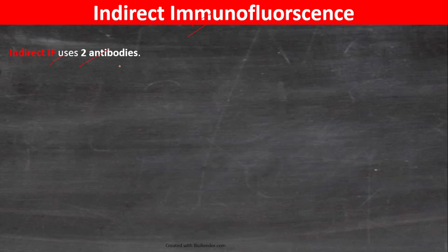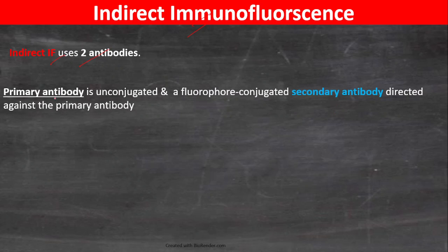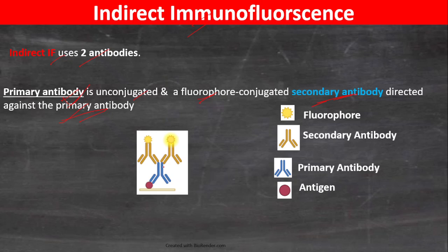Indirect immunofluorescence uses two antibodies. As the name suggests, the primary antibody is unconjugated, and a fluorophore-conjugated secondary antibody is directed against the primary antibody. As you can see here, this is the primary antibody and this is the protein of interest.